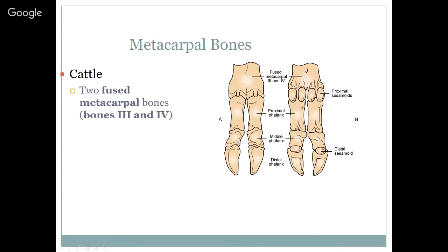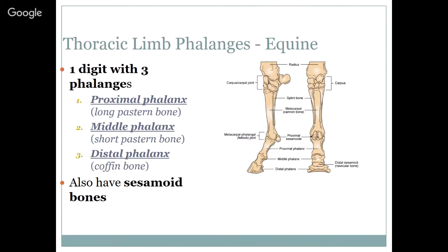Cattle have a fused metacarpal bone — three and four fused together — with their third and fourth digits having proximal through distal phalanges. In the equine, one digit with three phalanges: the proximal phalanx called the long pastern bone, the middle phalanx called the short pastern bone, and the distal phalanx called the coffin bone — which is encased in the hoof. If anything goes wrong with that coffin bone, this horse is in serious trouble. They also have proximal sesamoid bones and a navicular bone, which is a distal sesamoid. Certain breeds, primarily quarter horses, can have significant problems with the navicular bone.